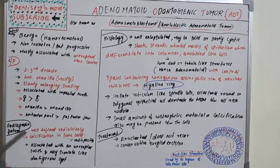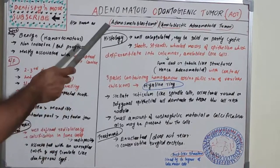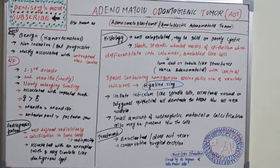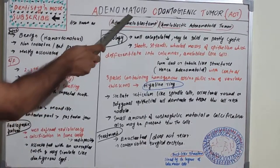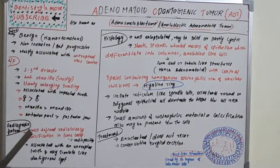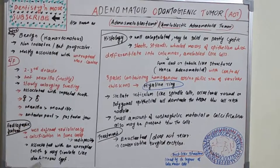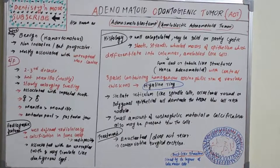The two key points when studying AOT — Adenomatoid Odontogenic Tumor — are: first, it has adenomatoid gland-like structures; and second, it is associated with an unerupted maxillary canine. These are the essential takeaway points of AOT.